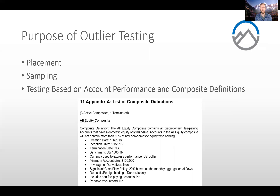The verifier is going to take a sampling approach, just like all testing items during the verification. However, outlier testing is a little unique in terms of sample sizes and what they are sampling. Unlike membership changes — entry and exit — the verifier doesn't have a specific set list going into the verification as far as what their population would be. The outlier testing population is going to vary based on the verifier and what they define as outlier performance, which may vary from verifier to verifier.